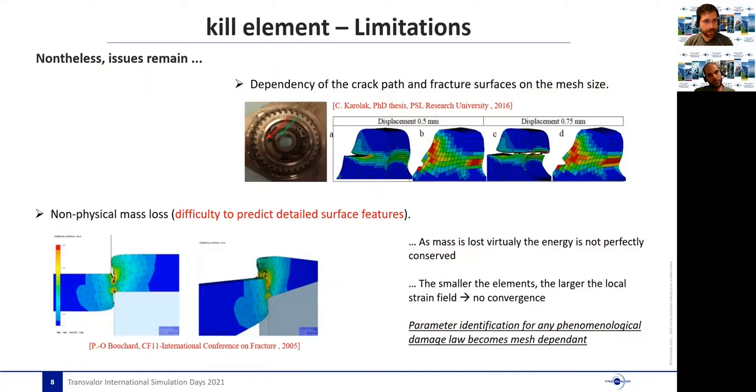Nonetheless, issues remain. The dependency of the crack path and fracture surface on the mesh size, and the fact that when doing kill elements, there's a non-physical loss of mass that is almost unavoidable. And as the mass is lost, also the energy cannot be perfectly conserved. Another issue is that even when refining the mesh, the smaller the elements, the larger the strain field. And since the damage loss depends on the strain normally, this implies that sometimes we cannot converge on the identification of the parameters of these phenomenological loss.